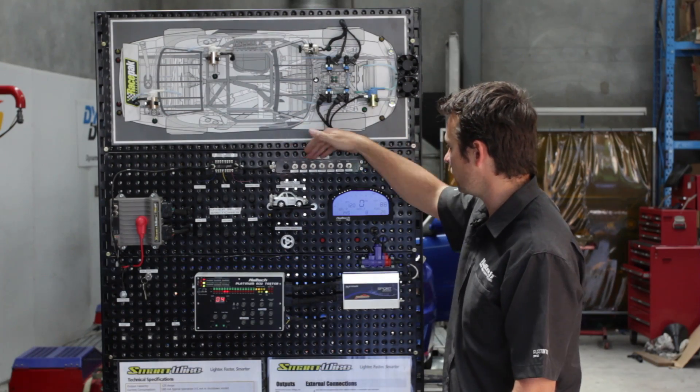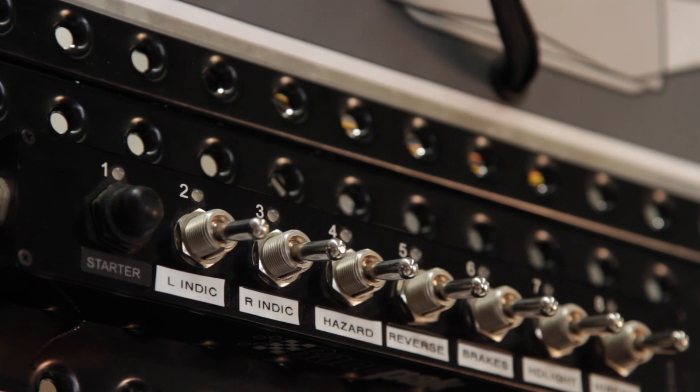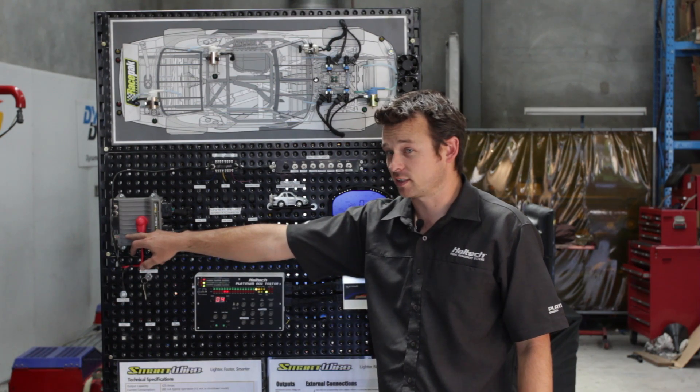You can set up what each of these switches does. We can turn the switch on and you can see we've got an LED saying that's on or off. If a fault condition arises that also shows up on there as well as on the SmartWire unit itself.